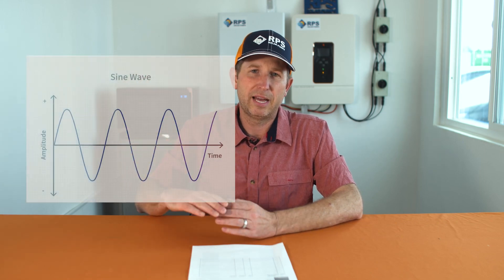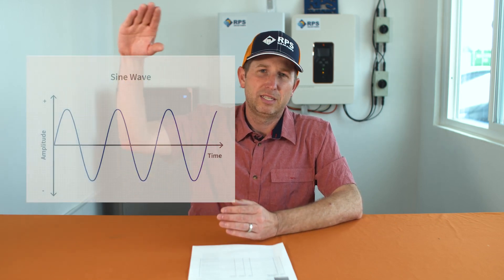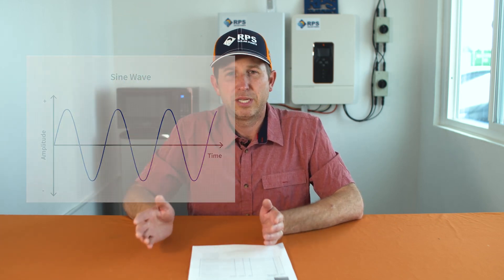An inverter is taking DC power — that's direct current power, what our solar panels generate and what batteries generate — and it's inverting that into AC power. That's a sinusoidal wave going up and down, positive to negative, and that's what our utility power is — the wall outlet you plug everything into. So an inverter inverts DC to AC.